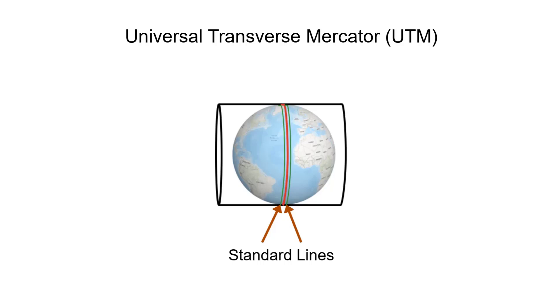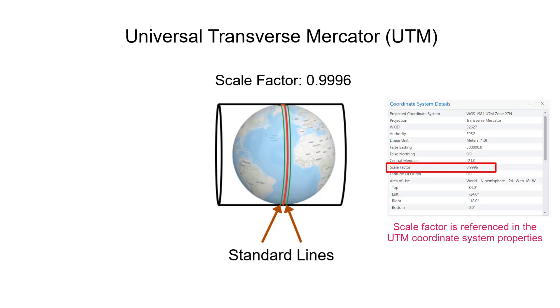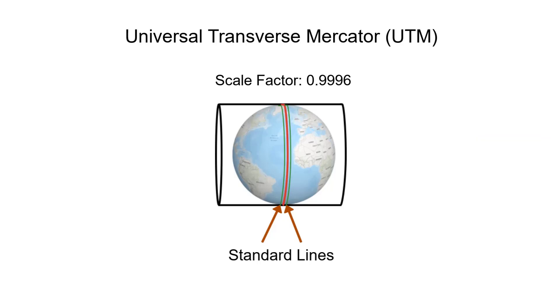The scale factor of the central meridian is 0.9996, meaning a distance of 100m would be 99.96m on the map projection. Therefore, there is a small distortion at the centre of the zone and then decreases to no distortion at the standard lines, before again increasing beyond the standard lines towards the edge of the zone.